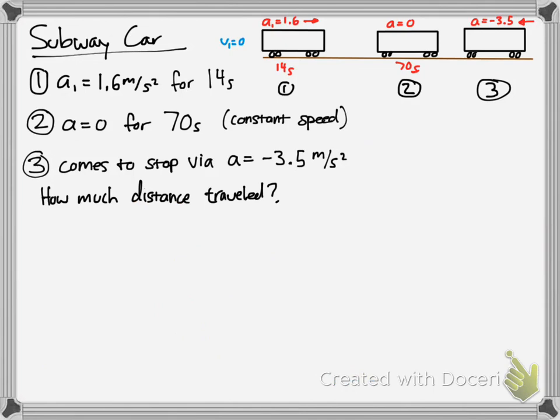So we'll move on to another problem. This one's really cool. You're on a subway car, your initial speed is zero, and the subway car accelerates at 1.6 m/s² for 14 seconds. Then it cruises at constant speed for 70 seconds. Then you need to come to your stop, and it slows down at -3.5 m/s². So the question is how much distance is traveled. I broke it up 1, 2, 3 and drew a diagram.